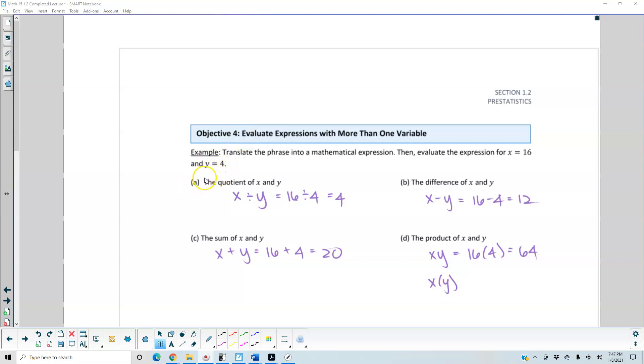So for part A, the quotient of x and y. Since this is division, order matters, and since x is written first, it's going to be x divided by y. Well, x is 16, y is 4, so 16 divided by 4 is equal to 4.